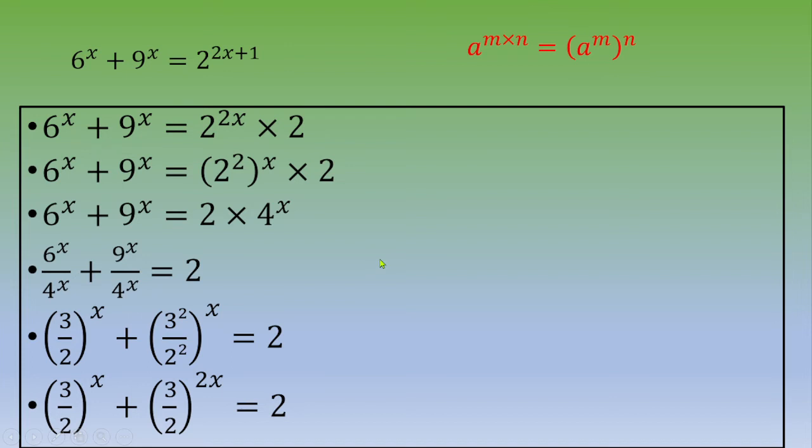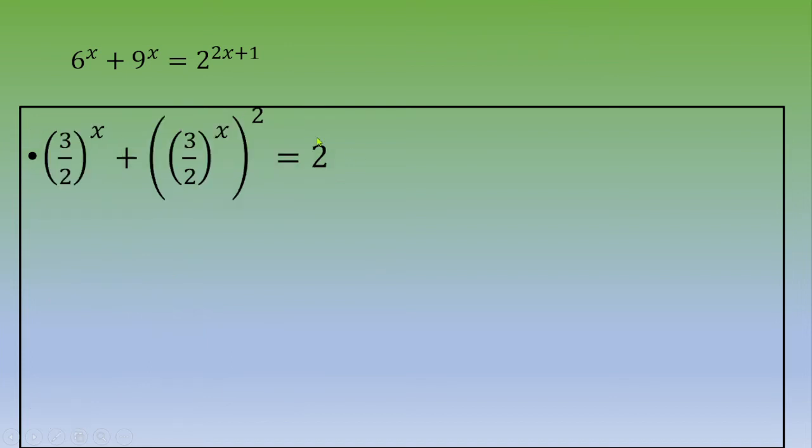Since they have the same power, you transform this into 3 divided by 2 power x plus 3 divided by 2 power x squared equals 2.